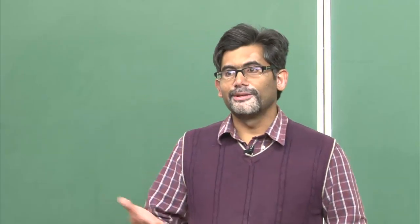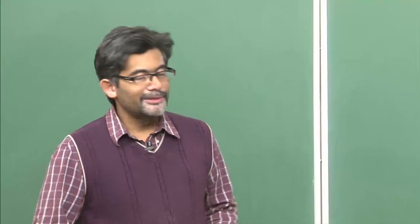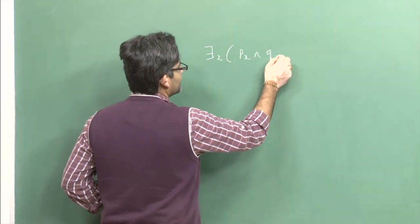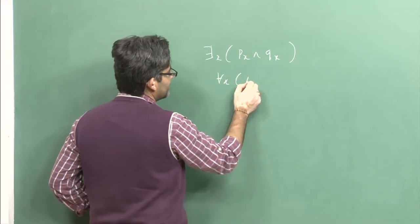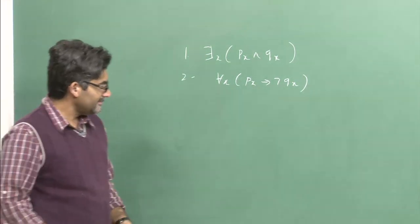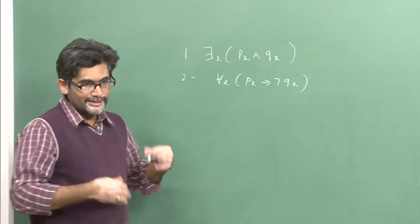The second thing is that if we want to talk about consistency of a set of statements in predicate logic, you construct a tree diagram for those sentences, and when a branch does not close, that means it satisfies the formulas, and hence the formulas are said to be consistent. For example, consider the statements: there exists some x P(x) and Q(x), and for all x, P(x) implies not Q(x). We want to check whether these two are consistent using the Semantic Tableaux Method.